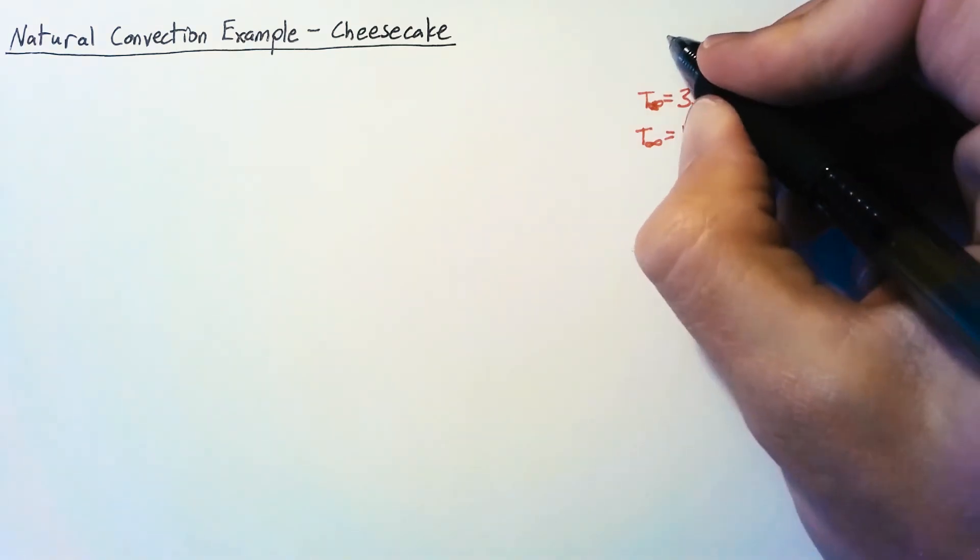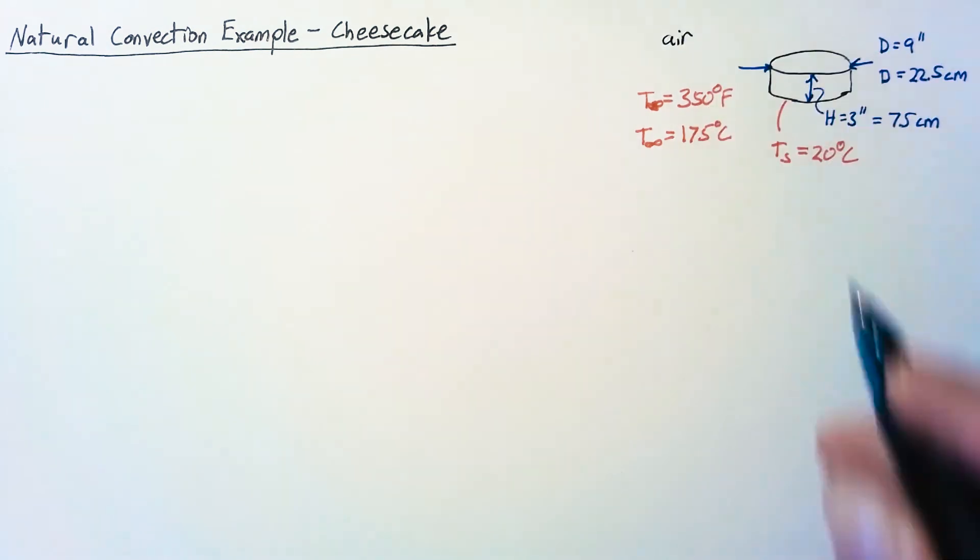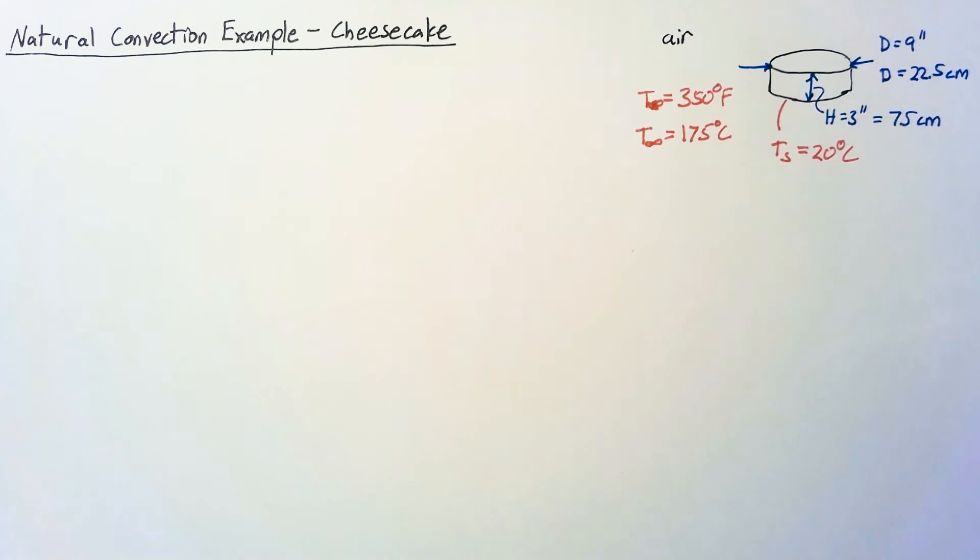And of course inside our oven we just have air, so all the properties that we're going to calculate are going to be based on air. Our goal here is to find the heat flow Q dot. So we're going to do this in three parts.